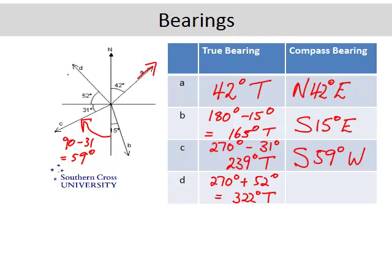And then D, between north and south, it's north. And from north you need to come around a certain angle in a westerly direction, and that angle is 90, take away 52, which is equal to 38 degrees. So that means that direction D, or bearing D, is north 38 degrees west.